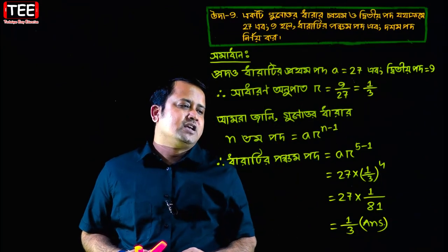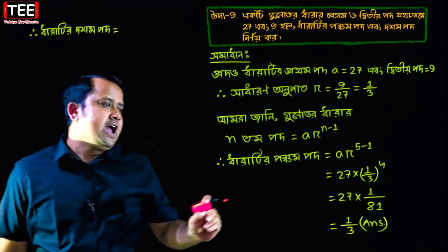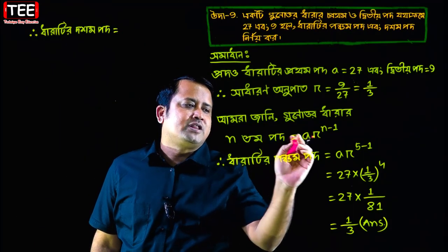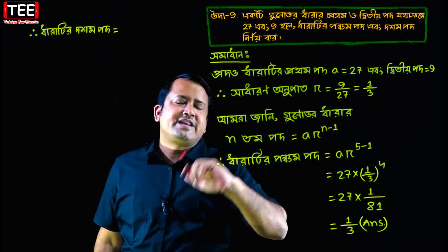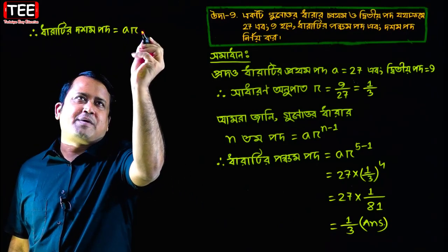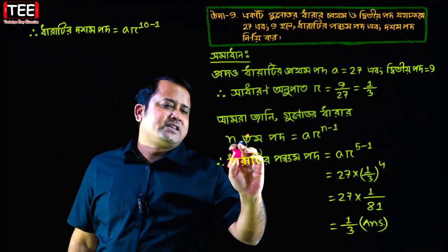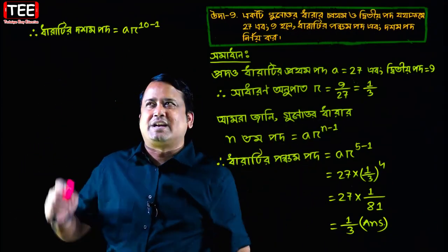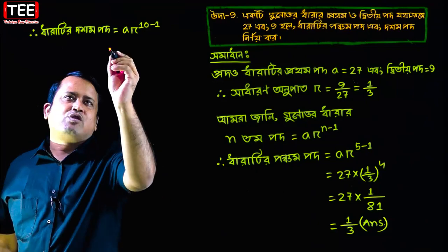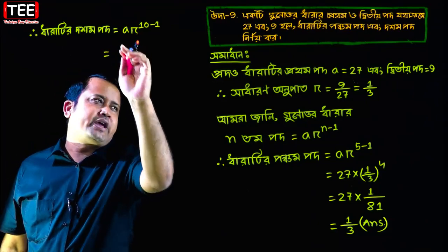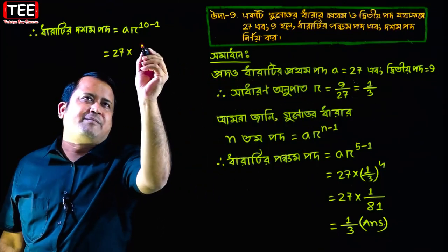Now write the 10th term. Let's look at the 10th term — write it down. The value of the 10th term comes out to be 1 by 3.